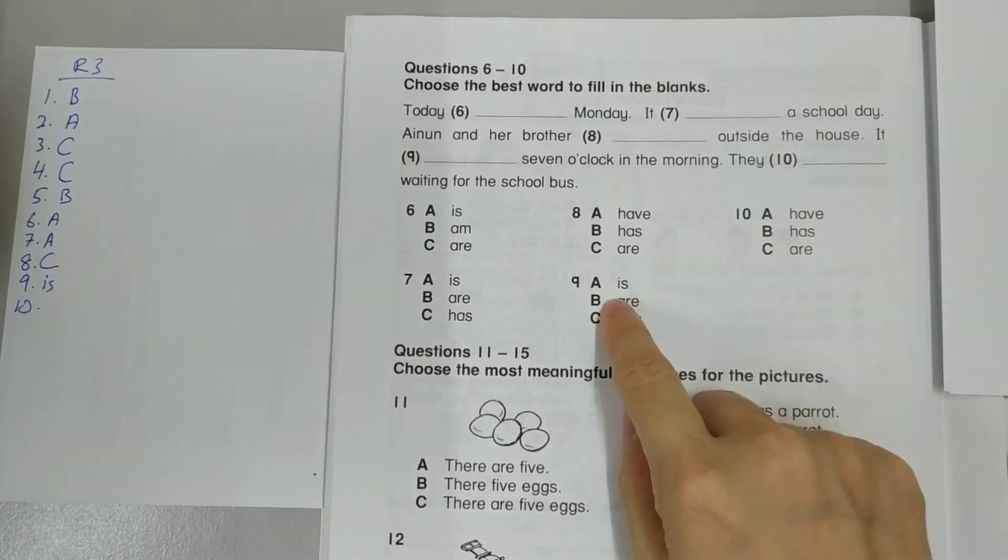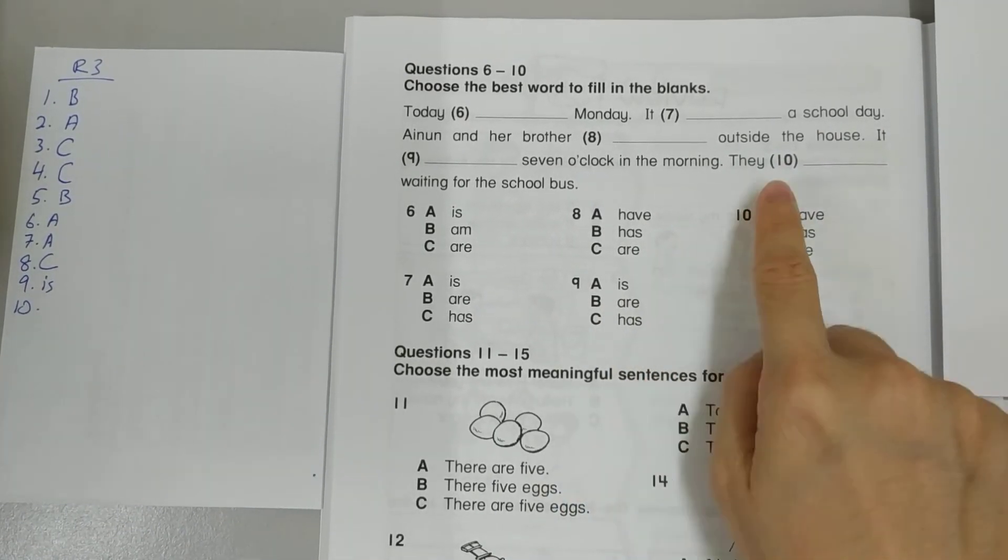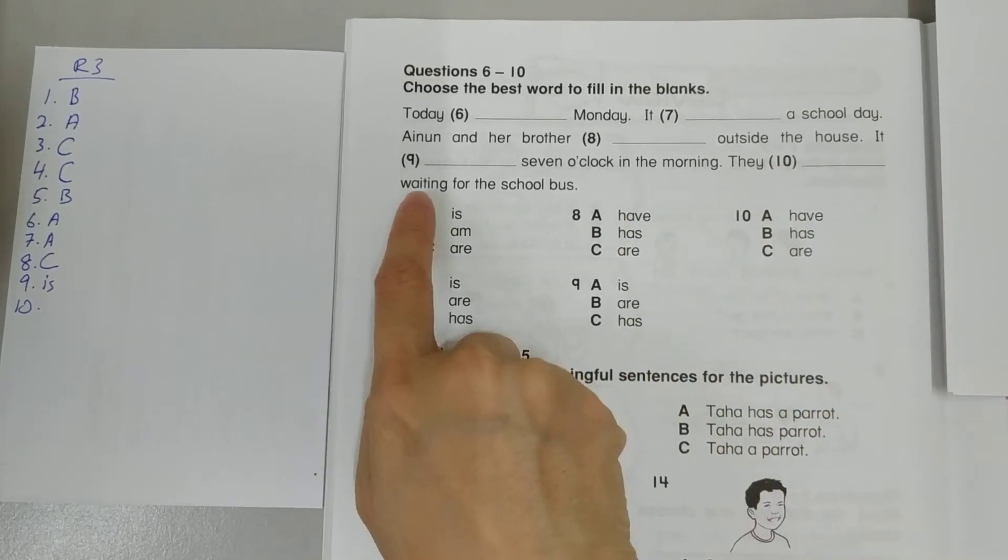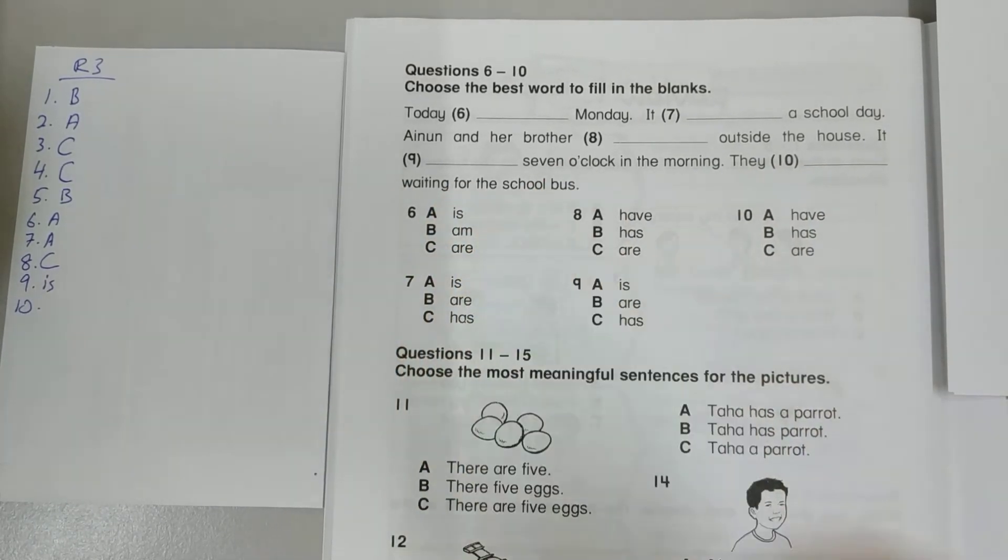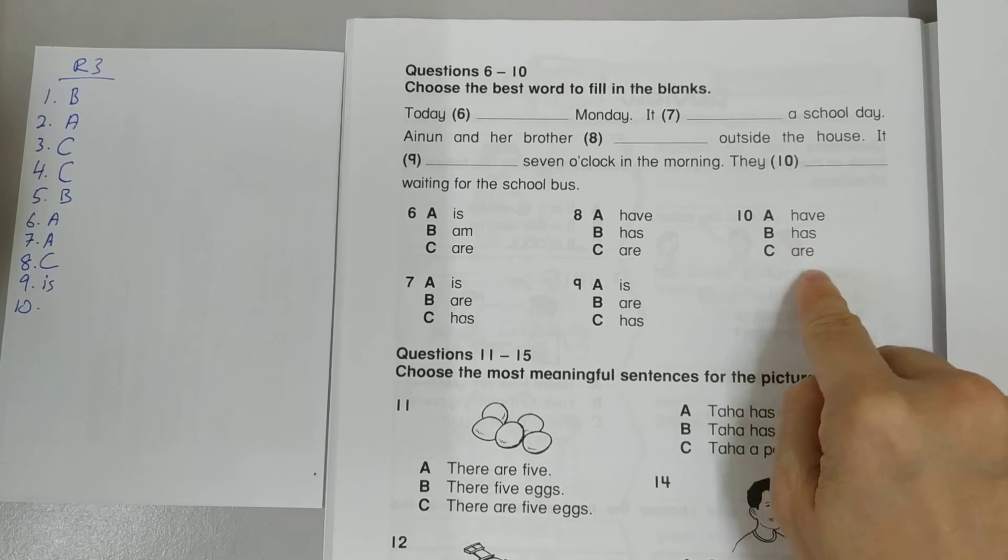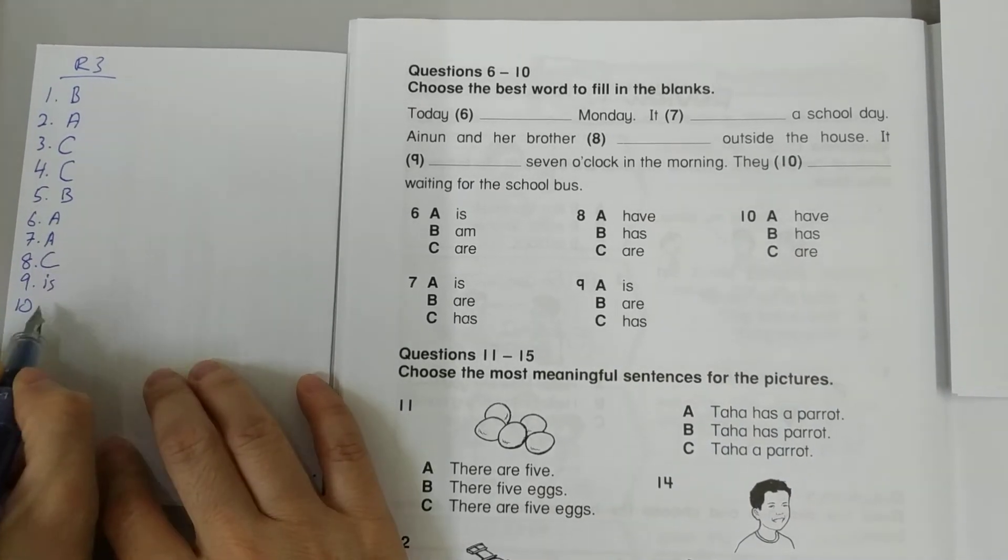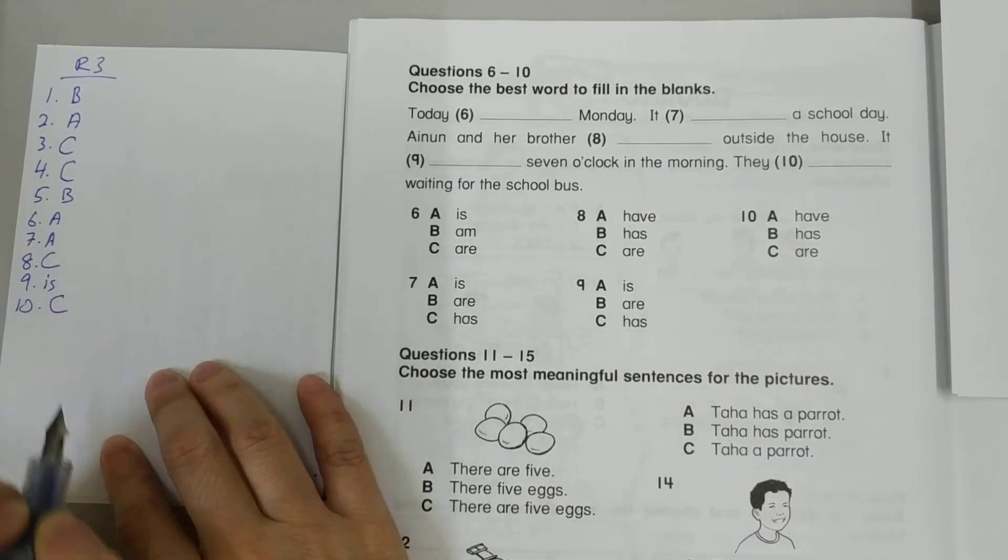They something waiting for the school bus. They are waiting for the school bus. So number 10 is C.